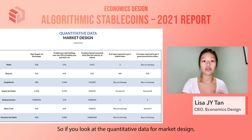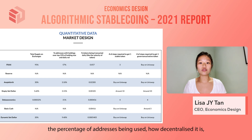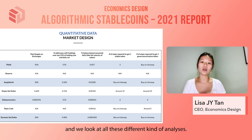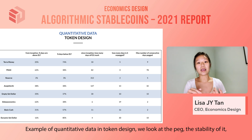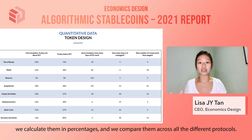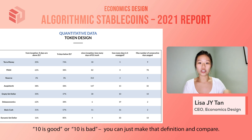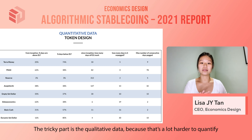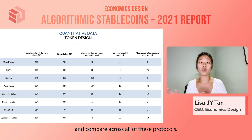For quantitative data in market design, we look at things like total supply on exchanges, the percentage of addresses being used, and how decentralized the protocol is. For token design, we look at peg stability, calculated in percentages and compared across all protocols. Quantitative data is easier to compare since these are numbers — you can define thresholds and compare directly. The trickier part is qualitative data, which requires deeply understanding the mechanism in order to quantify and qualify comparisons across all these protocols.